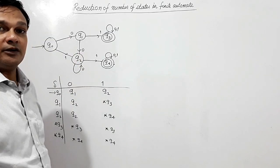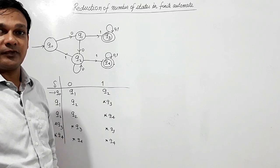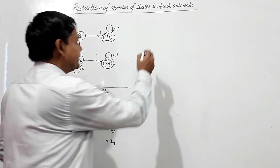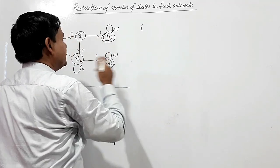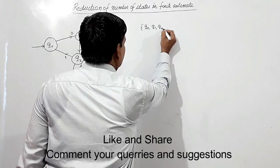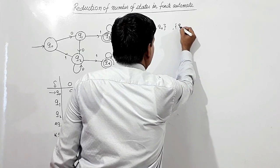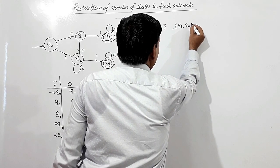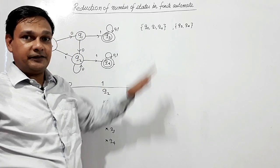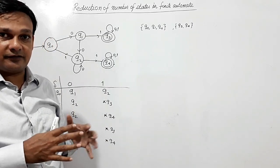Now we have written the transition table for this DFA. We have to divide these states into two sets: the set of non-final states and the set of final states. The set of non-final states is {Q0, Q1, Q2} and the set of final states is {Q3, Q4}. Now we shall see whether these states can be further segregated or not.